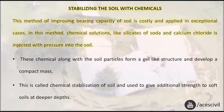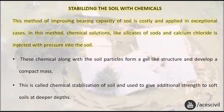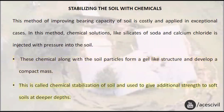Stabilizing the soil with chemicals: This method of improving bearing capacity of soil is costly and applied only in exceptional cases. Chemical solutions like silicates of soda and calcium chloride are injected with pressure into the soil. These chemicals along with the soil particles form a gel-like structure and develop a compact mass. This is called chemical stabilization of soil and is used to give additional strength to soft soils at deeper depths.